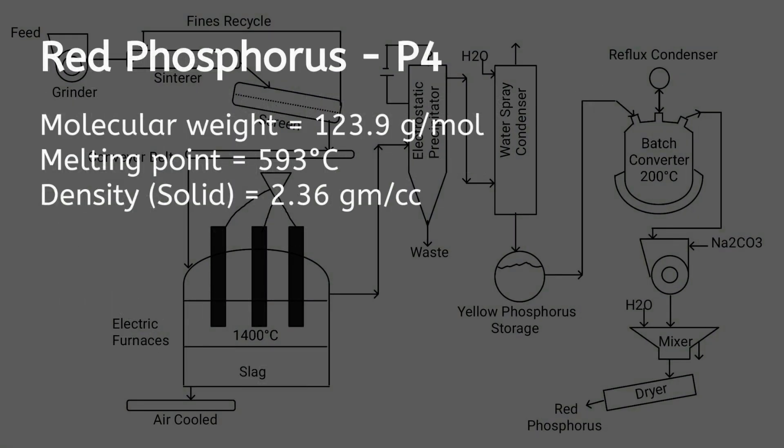The molecular weight of red phosphorus is approximately 123.9 grams per mole. It has a melting point of 593 degrees Celsius, and its solid density is approximately 2.36 grams per cc.